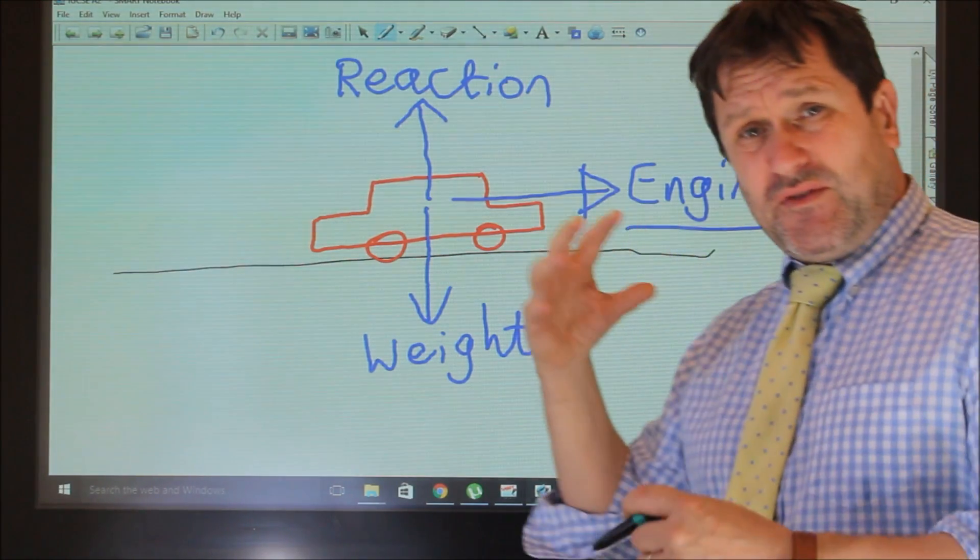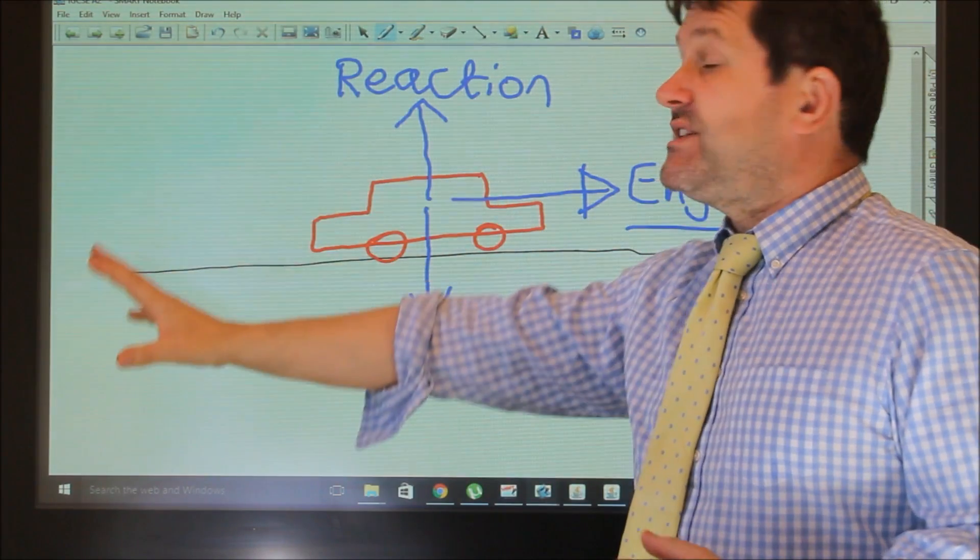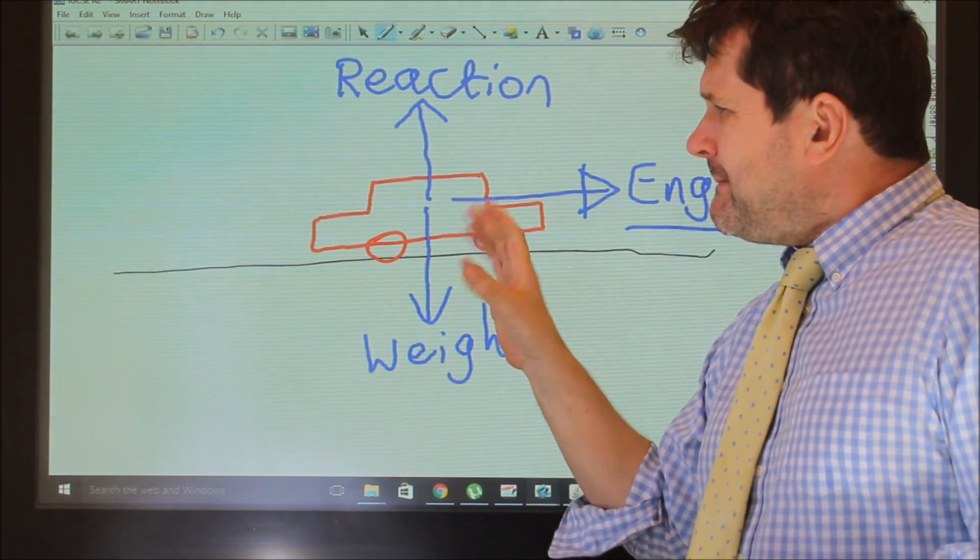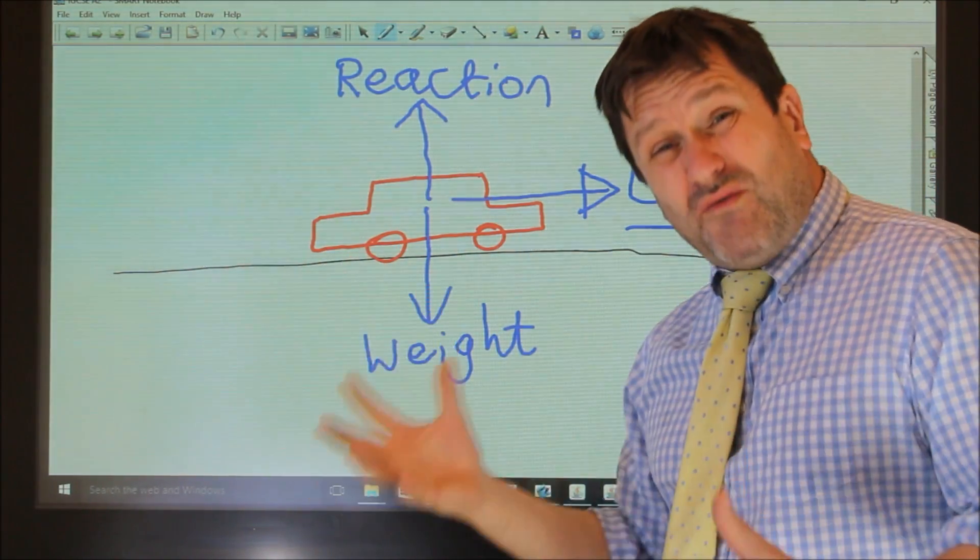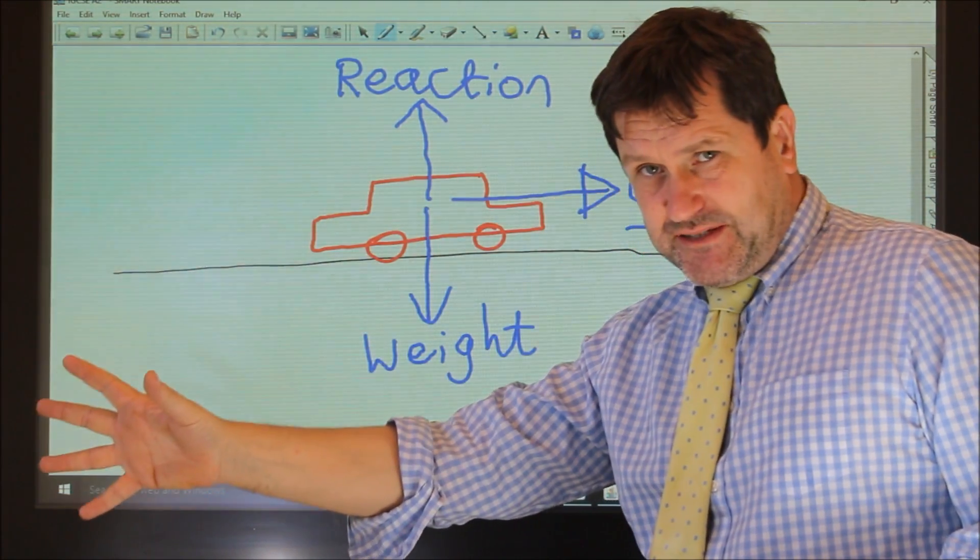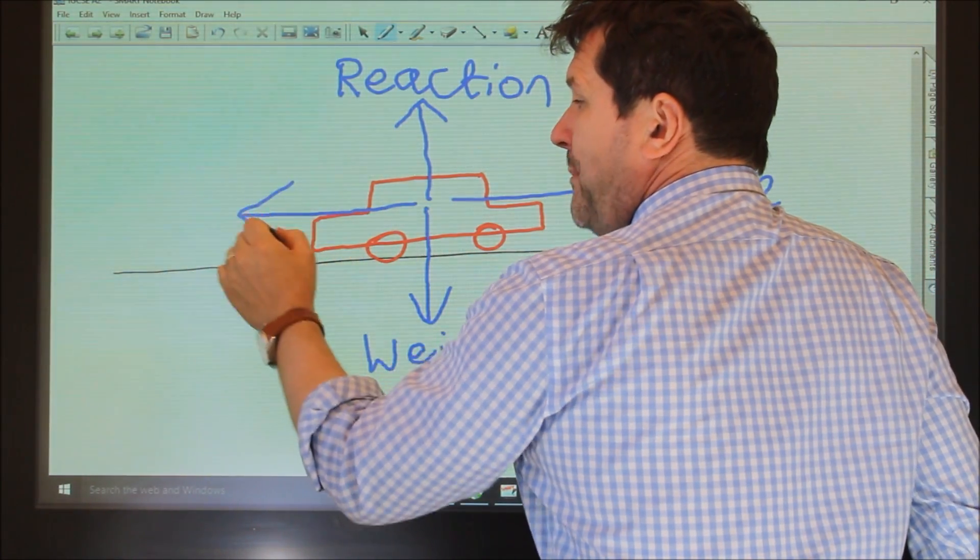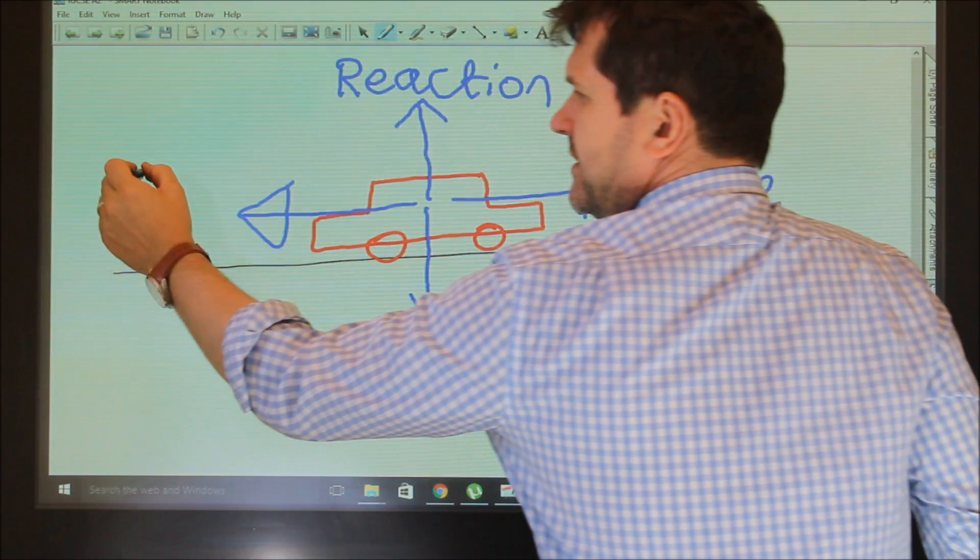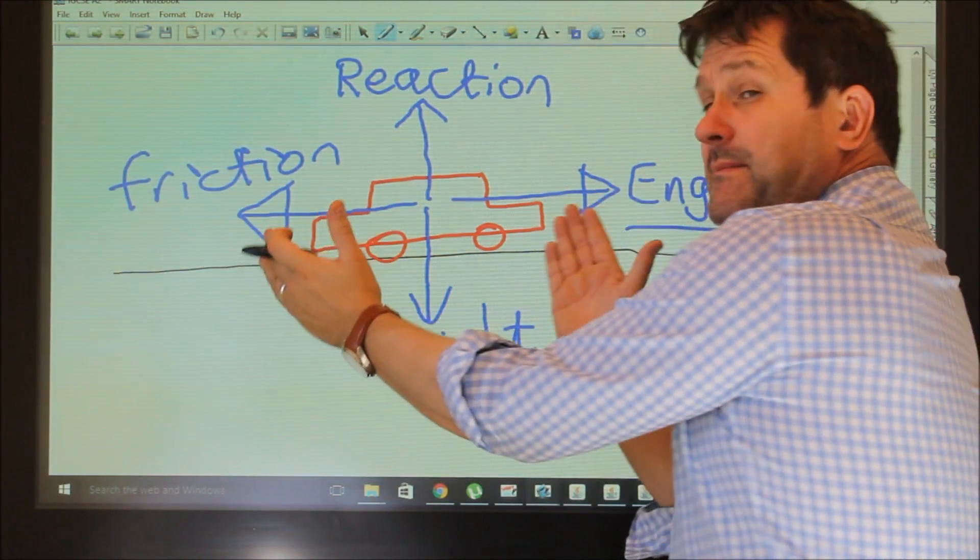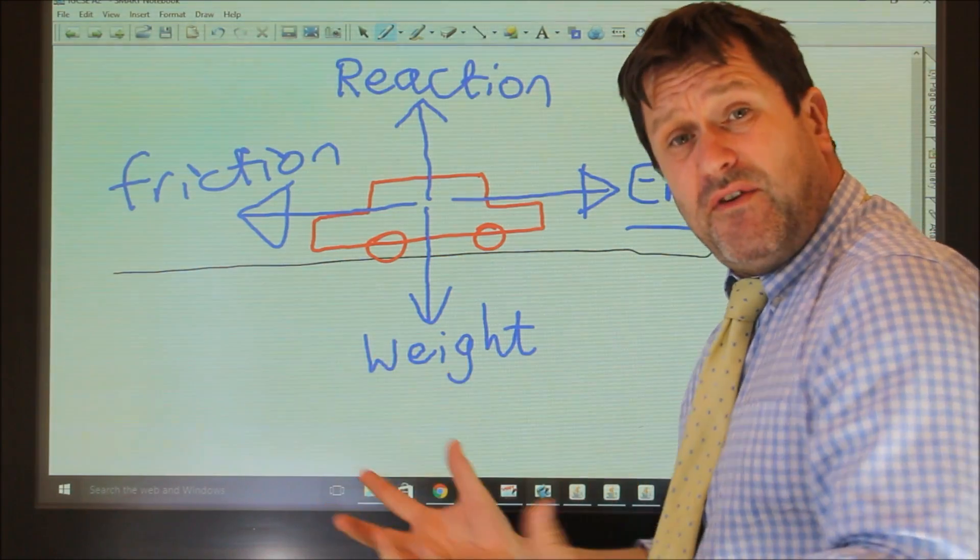But normally, you would have another force acting backwards. In this case, you think about a car, you've got air resistance or drag acting in the opposite direction if you've got motion in this plane. You'd also have things like friction. So you've got friction, air resistance, acting in the opposite direction. So if the air resistance and the friction is acting in the opposite direction, if those forces are the same, then it's balanced. If they are not balanced, then we get what's called the resultant force.